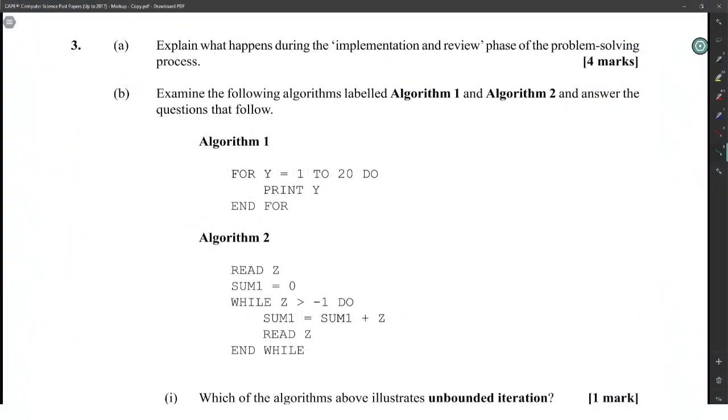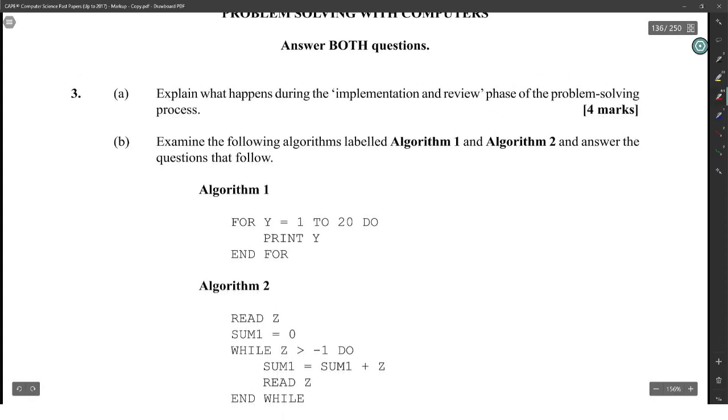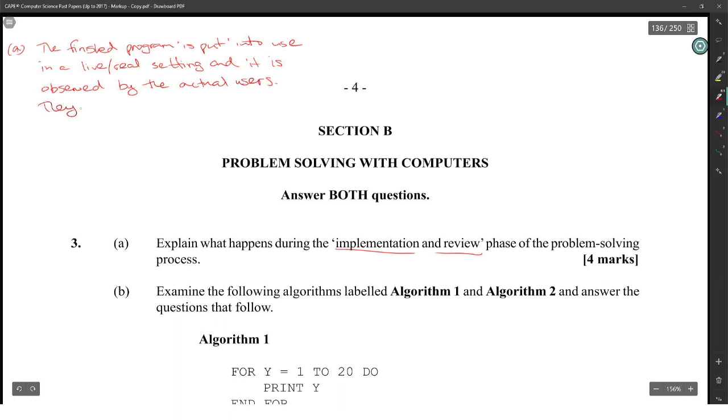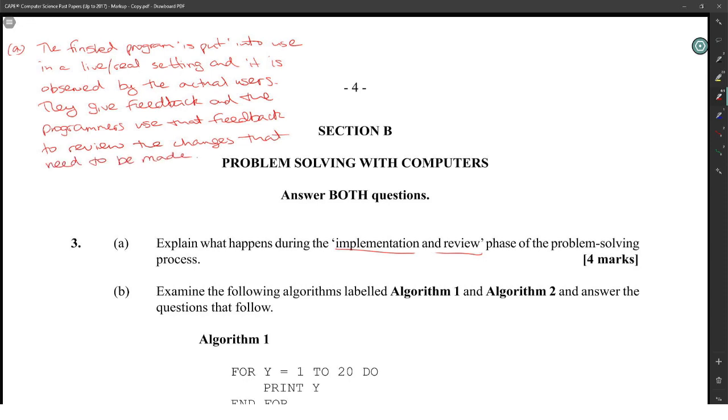Alright, explain what happens during the implementation and review phase of the problem-solving process. This first question is always an explanation of the problem-solving process. Implementation would be the finished program is put into a live, real-world setting and it is observed by the actual users. They give feedback and the programmers use that feedback to review the changes that need to be made. Something like that should be okay for you.